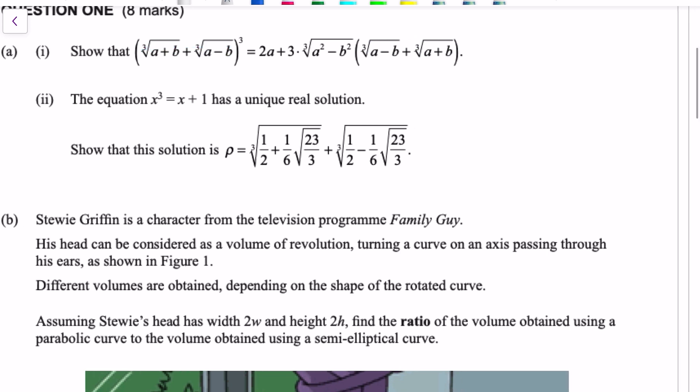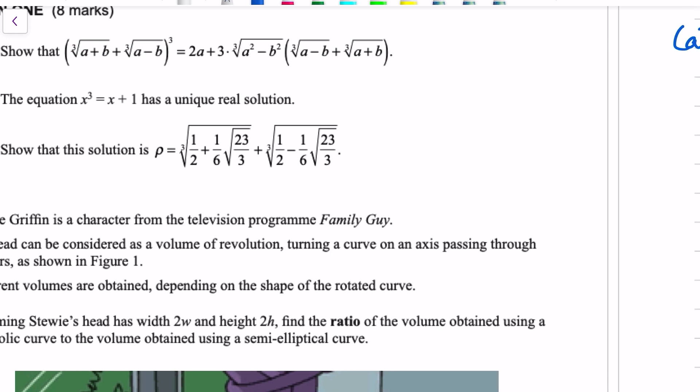So, what we need to do is realize that a is equal to 1 half and b is equal to 1 sixth times root 23 over 3. Very interestingly chosen values. Now, the first term in the right-hand side is 2a. And, of course, 2a equals 1. So, cool, we've got that 1.